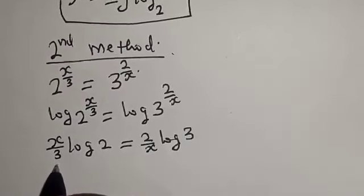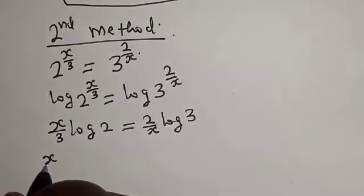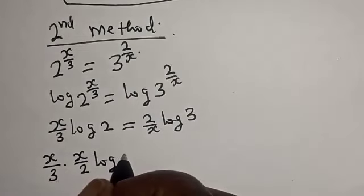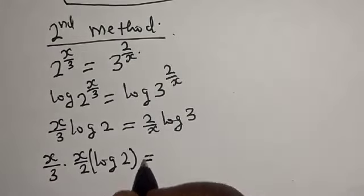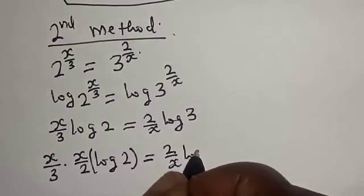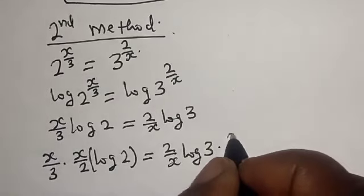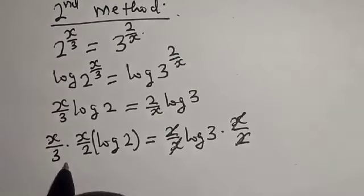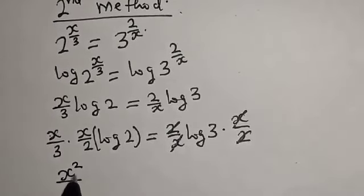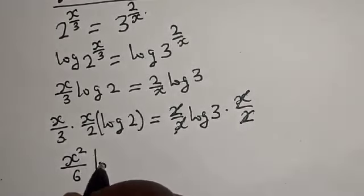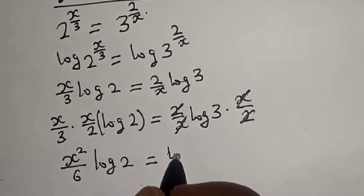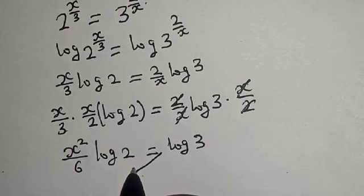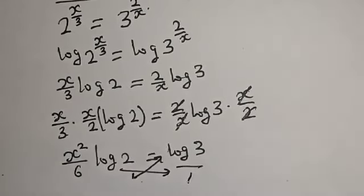In this case we are going to multiply both sides by x over 2. So x over 3 multiplied by x over 2 log 2 is equal to 2 over x log 3 multiplied by x over 2. This one will cancel this, this one will cancel this, giving us x squared divided by 6 log 2 is equal to log 3.